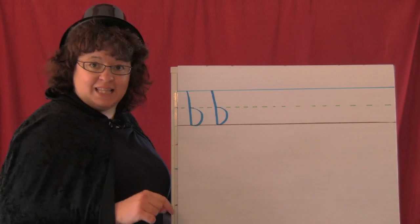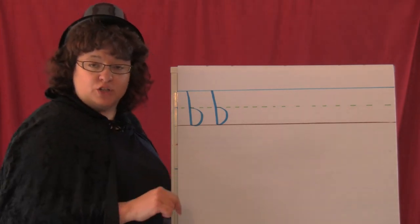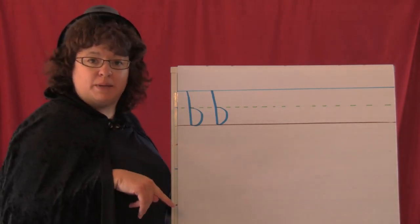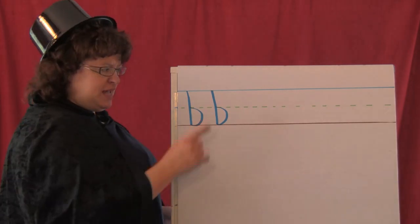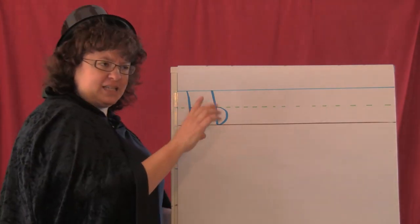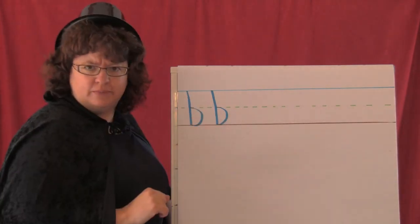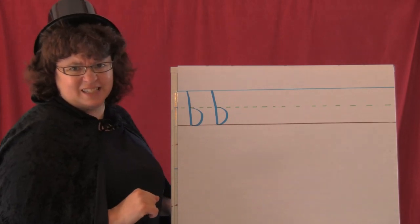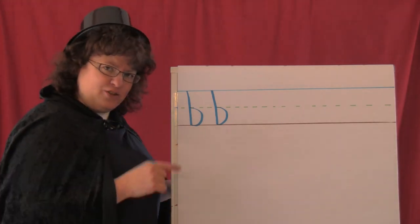All righty, kids. Last letter of the line and circle letters we're going to learn today is a lowercase p. And lowercase p is just like b, except it's turned around and flipped upside down. So I guess that's not just alike, is it? Anyway, let's learn our lowercase p.